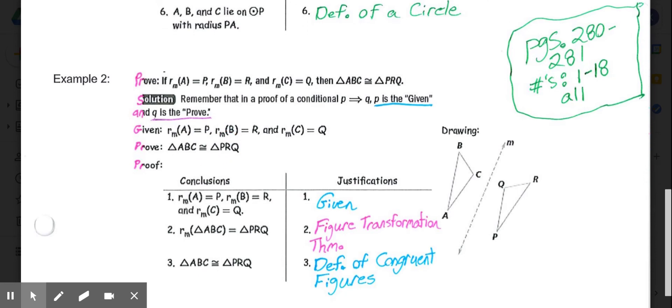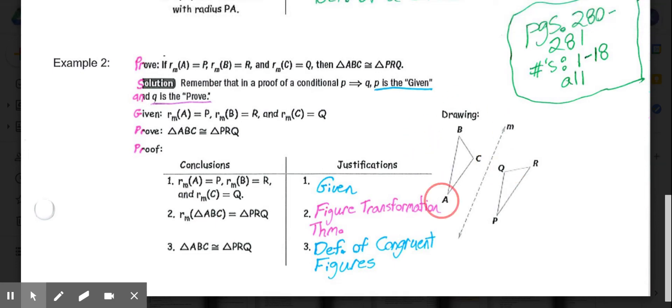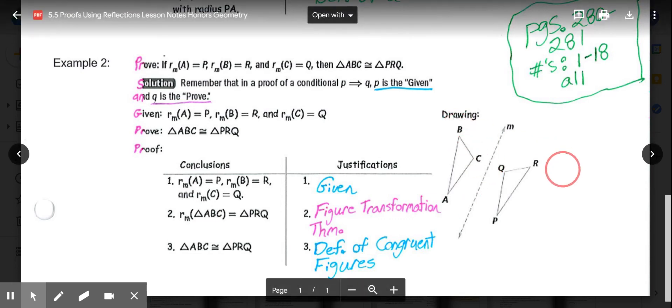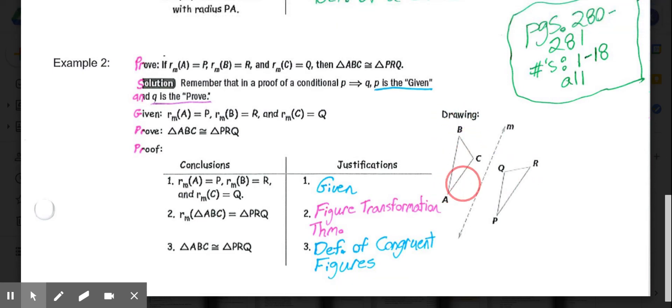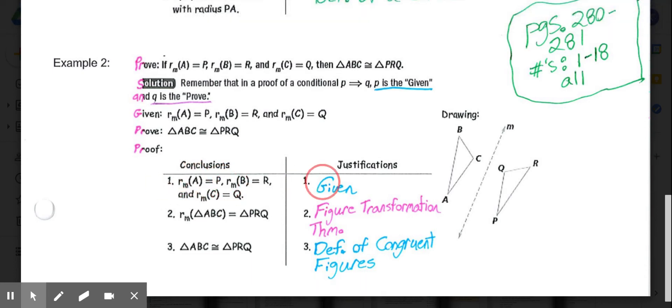My advice for any proof is if they don't give you a drawing, you can always create yourself a drawing to help you make sense of the situation. I'm not sure exactly what these triangles look like, but I know A reflects to P, B to R, and C to Q. So I just drew a triangle and reflected it so I had an image to go with. The first conclusion is always either your whole or part of your given. In this case, it was all the given info.